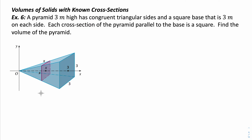Let's take a look at this first example, which is here to help us visualize this idea. We have a pyramid that is three meters high, has congruent triangular sides, and has a square base — so it's a square pyramid — and the base is three meters on each side. Each cross section of the pyramid parallel to the base, if we were to take a cross section parallel to the base, they are all squares. So we have square cross sections.